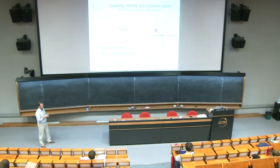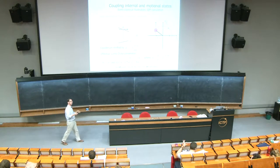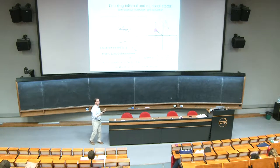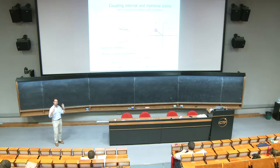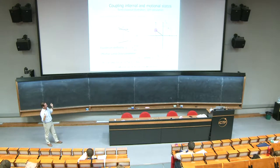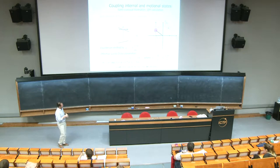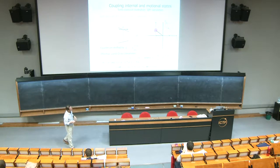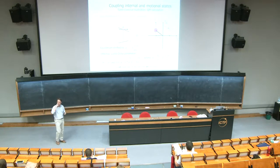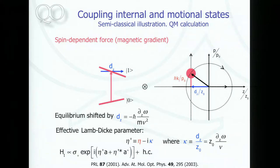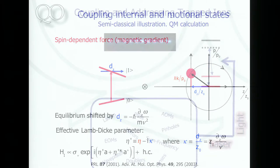We were talking about modifying an ion trap by adding a magnetic field gradient, and I showed you that you end up with this magnetic gradient-induced coupling. We quantitatively looked at this. Now I'd like to go back to a view from the lab, away from the formulas and mathematics. What does this really mean for the work in the lab?